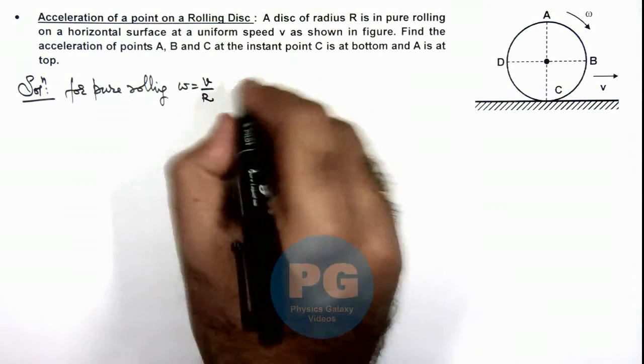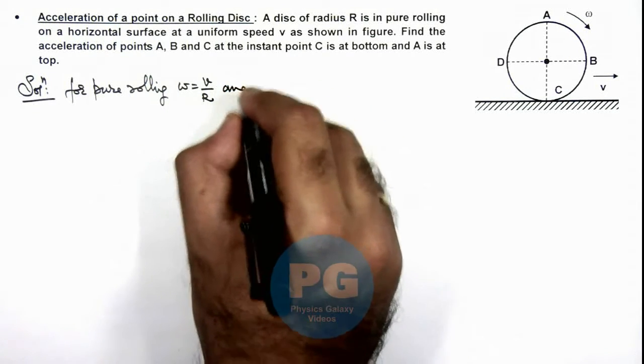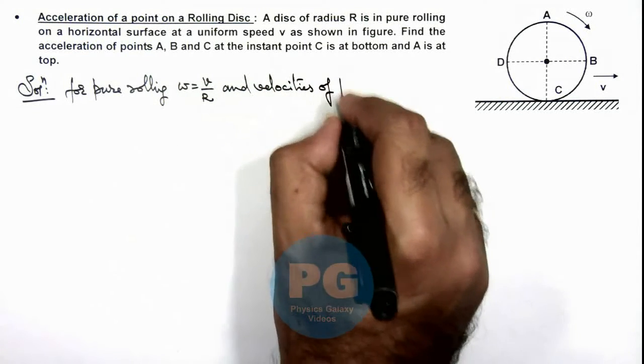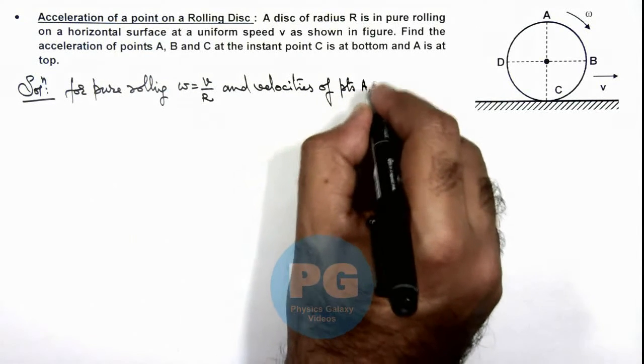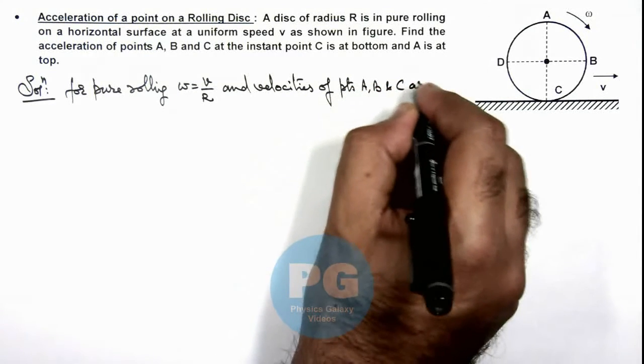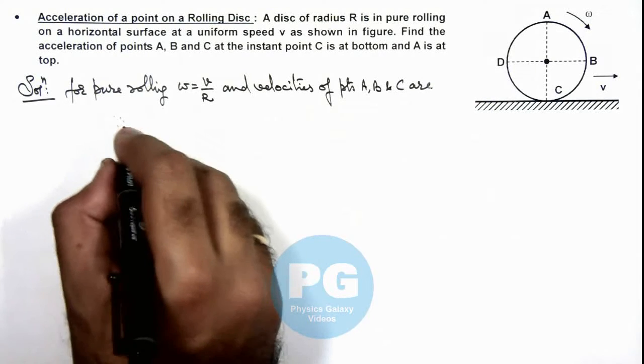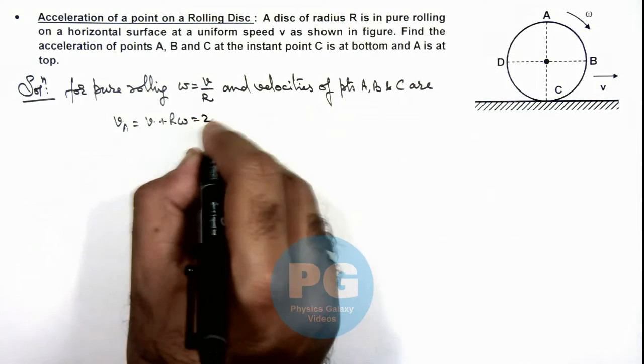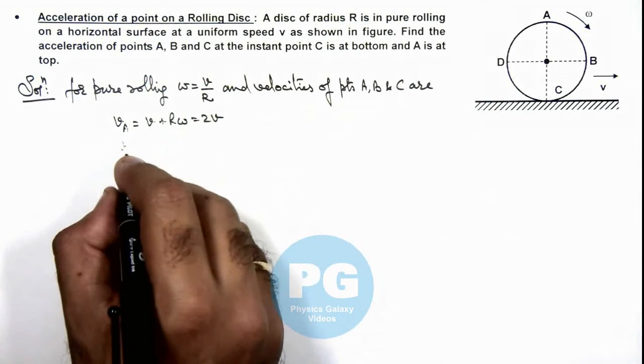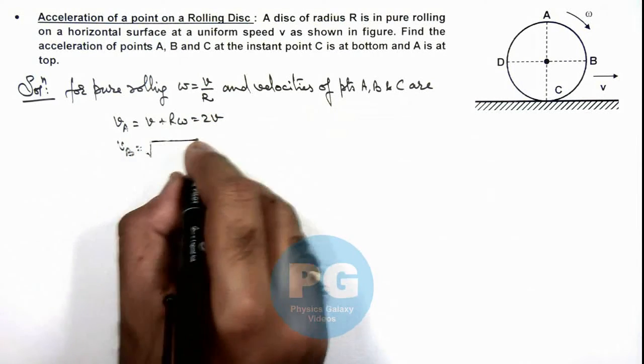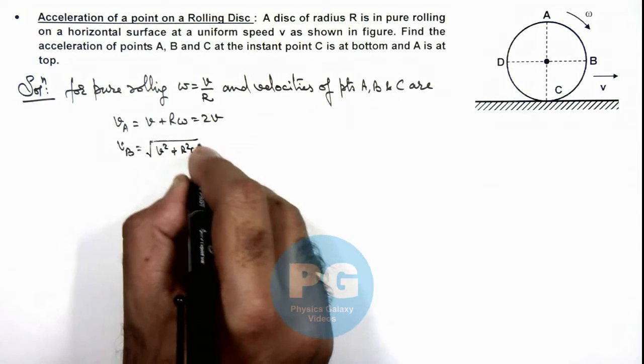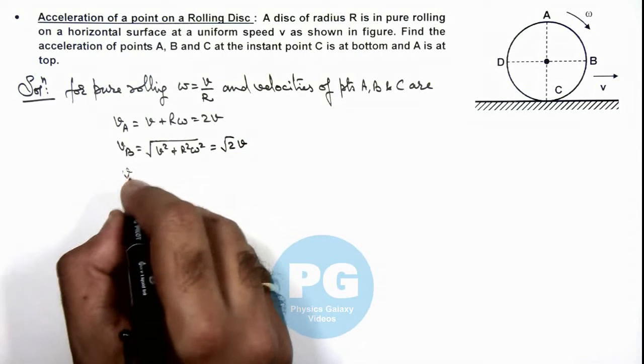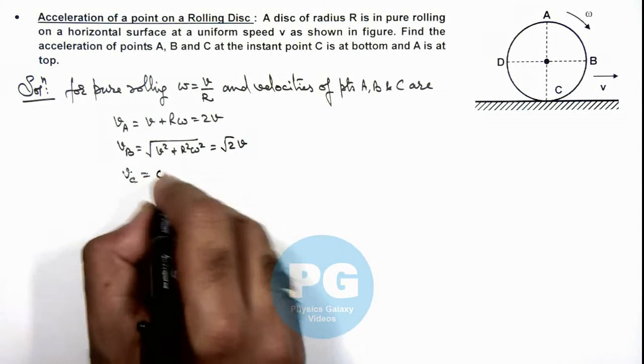And here we can write velocities of points A, B and C. Velocity of A we can write as v plus R omega, that is equal to 2v. Velocity of B will be root of v square plus R square omega square, that is root 2 v. And for point C we can say its velocity will be zero.